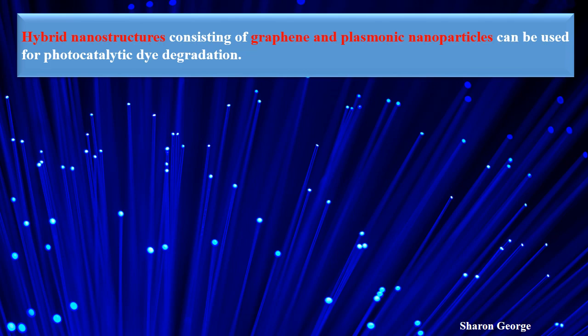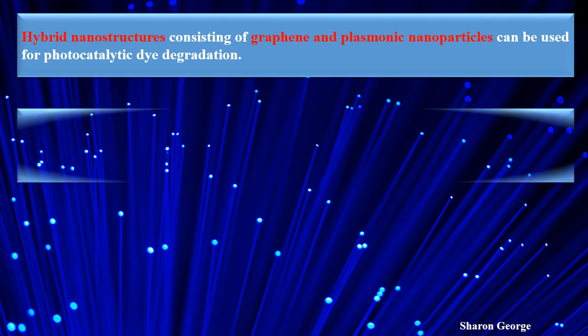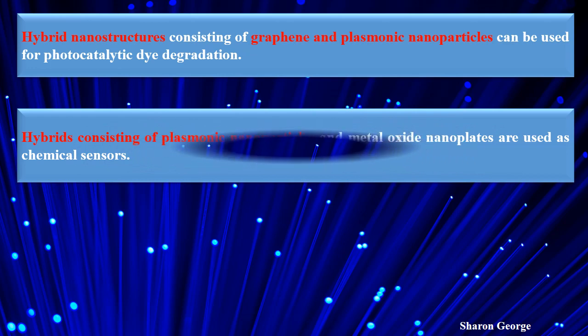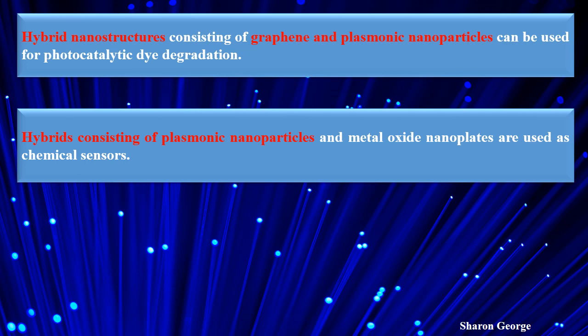This is also one of the applications of nanophotonic materials. Another hybrid application consists of plasmonic nanoparticles and metal oxide nanoparticles and metal oxide nanoplates that we can use as a chemical sensor.